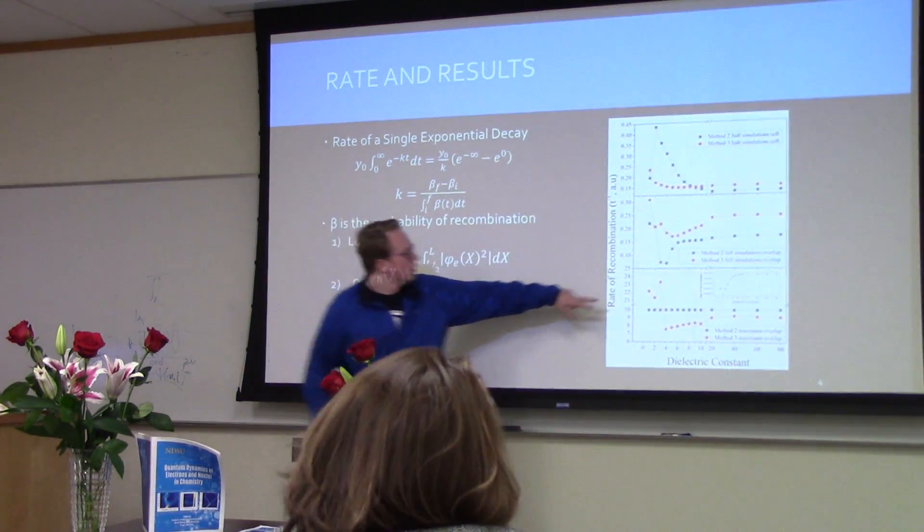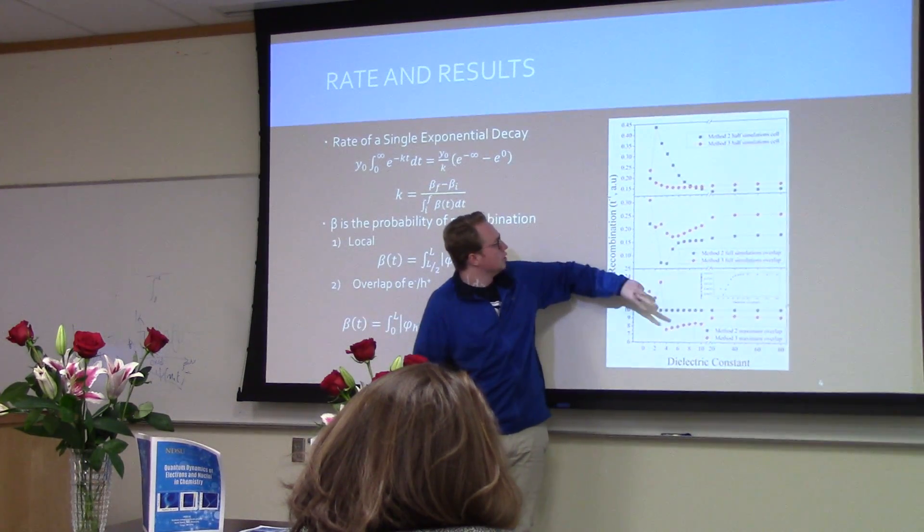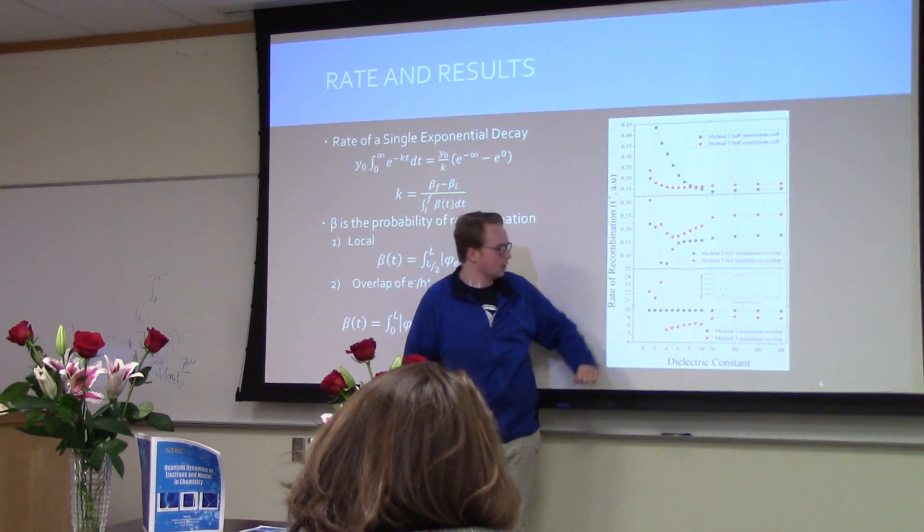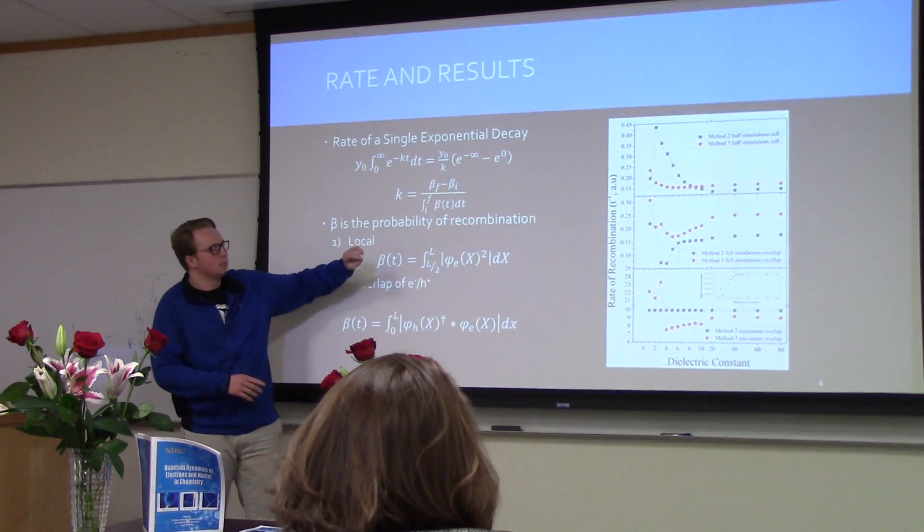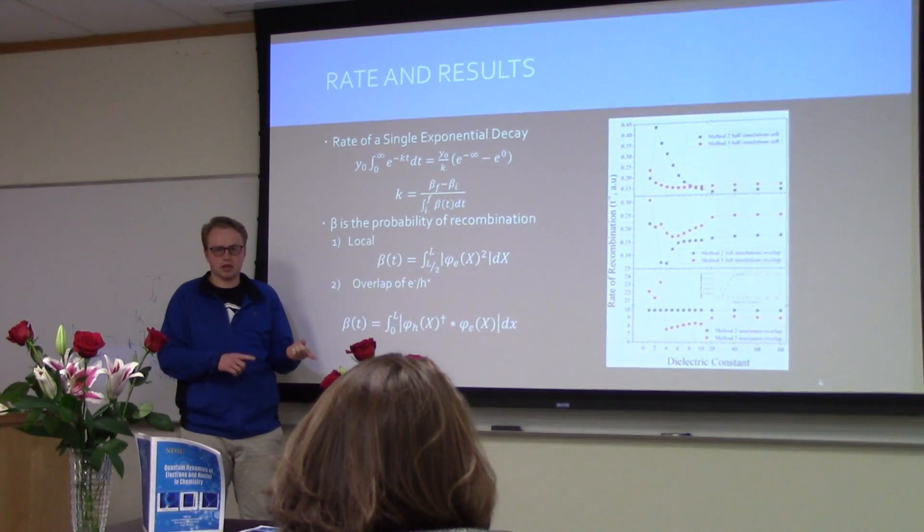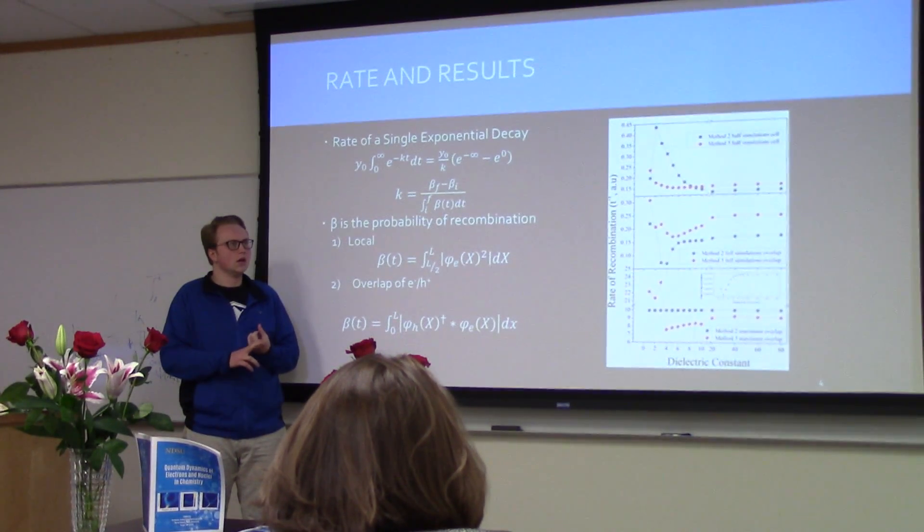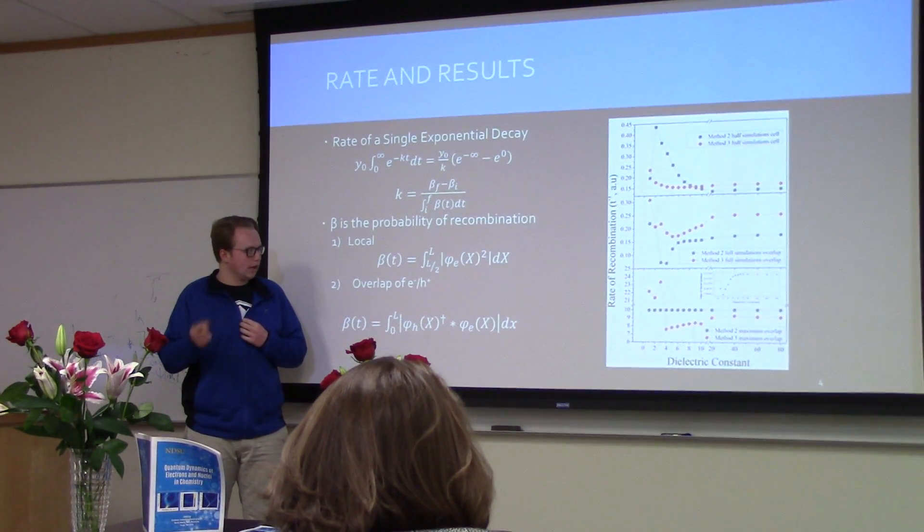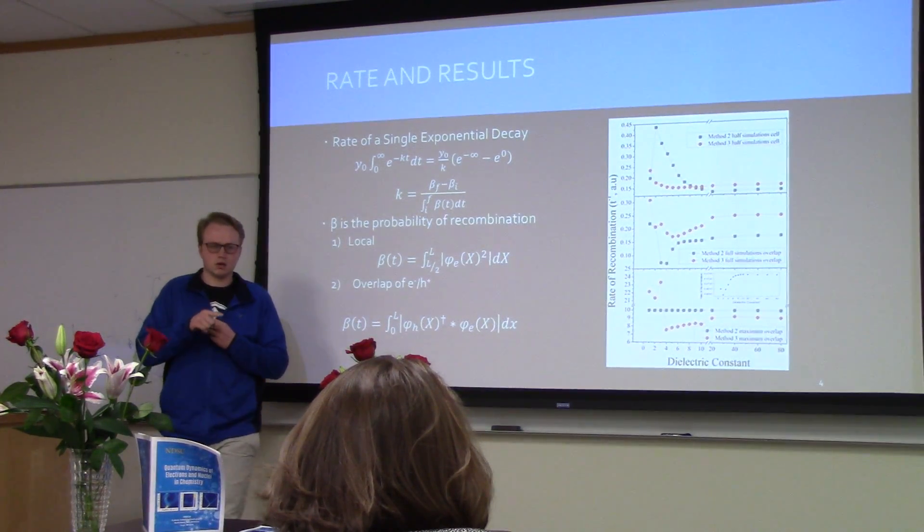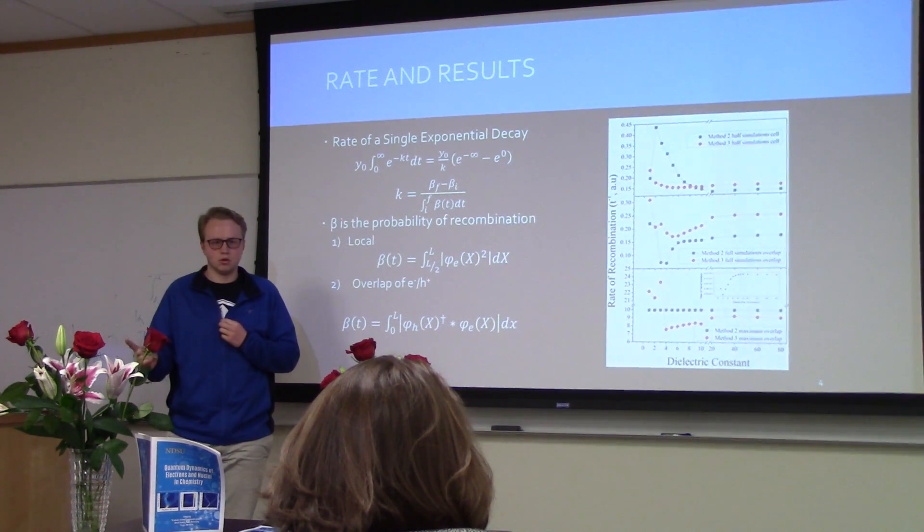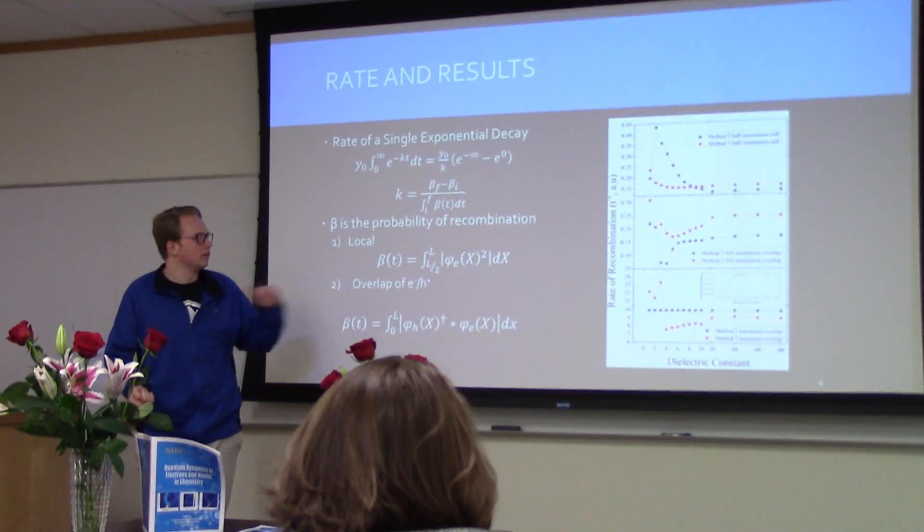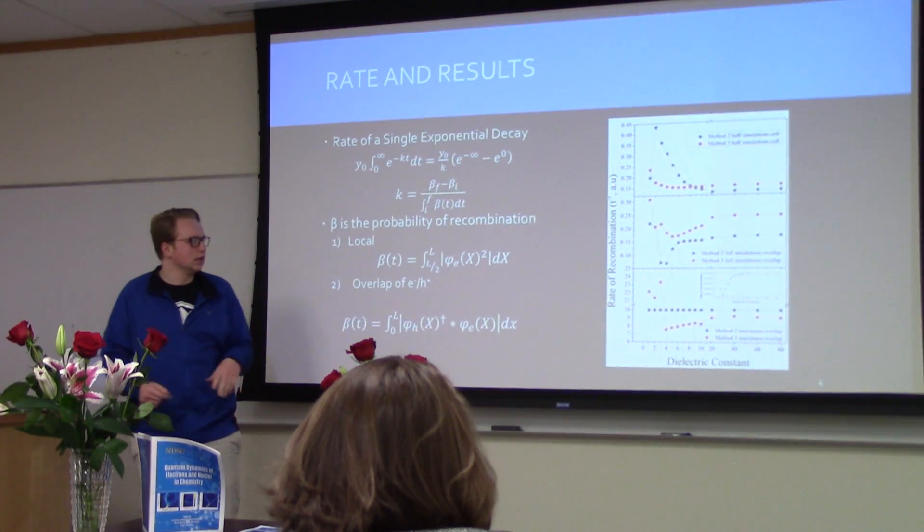Black and red here are two different methods. Black is method two and red is method three. Method two is doing a Fourier transform of the momentum operator from momentum space to spatial space, and the third method is using the definition of a derivative to get the momentum.